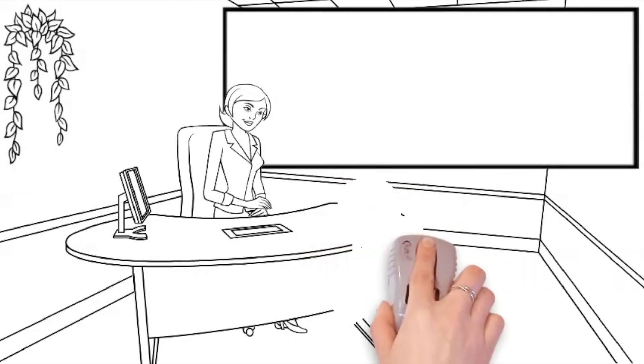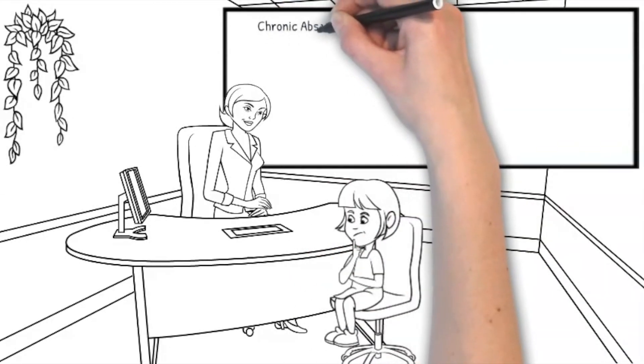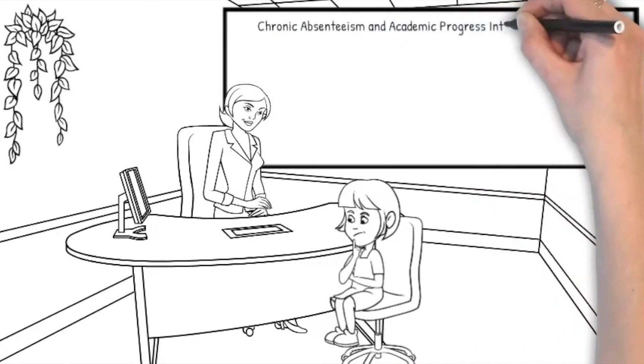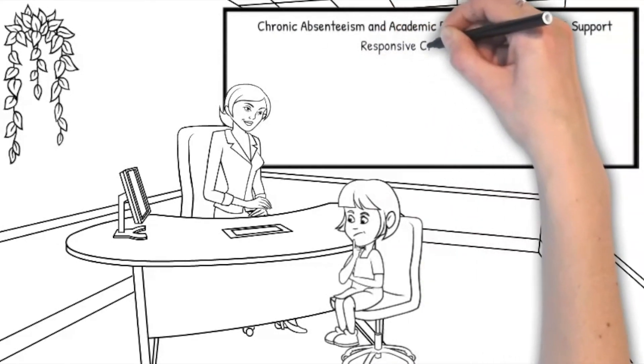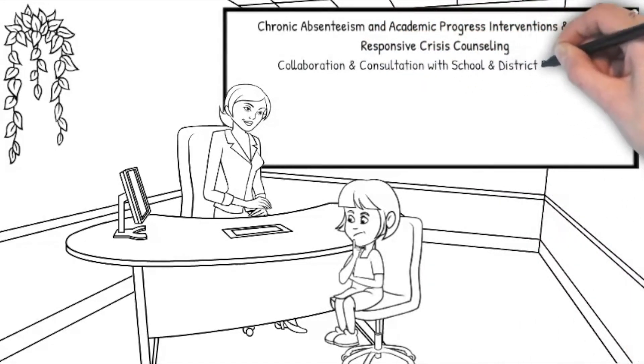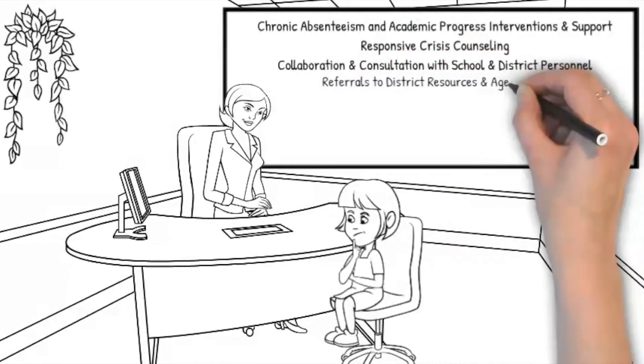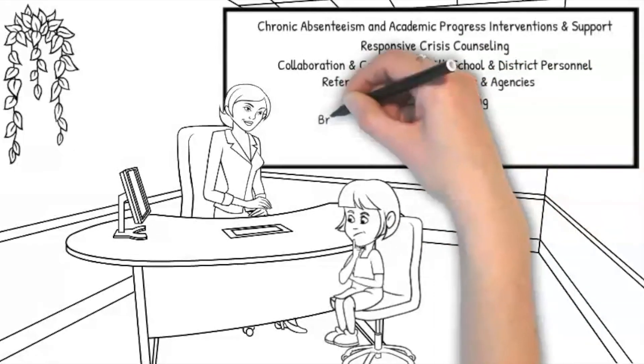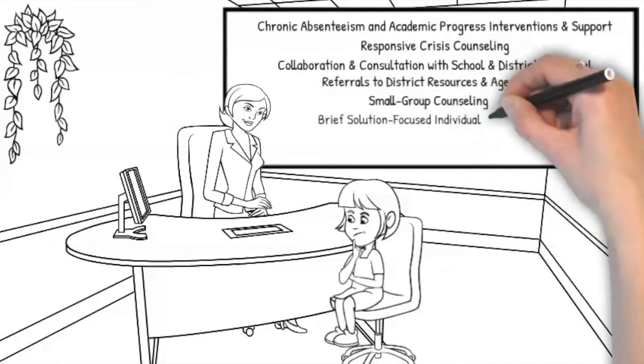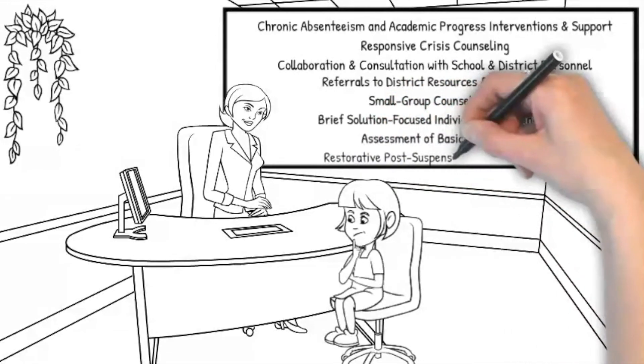Students who need more support receive the following services: chronic absenteeism and core academic progress interventions and support, responsive crisis counseling, collaboration and consultation with school site and district personnel to ensure wraparound services for students, referrals to district resources and agencies, small group counseling, brief solution-focused individual counseling, assessment of student basic needs, and restorative post-suspension conferences.